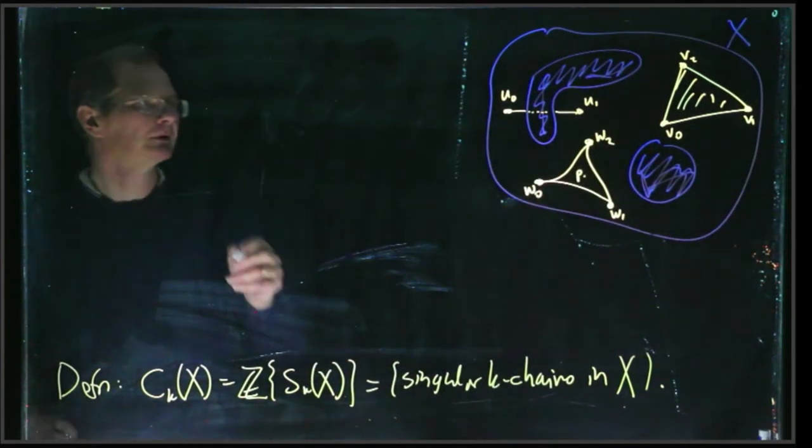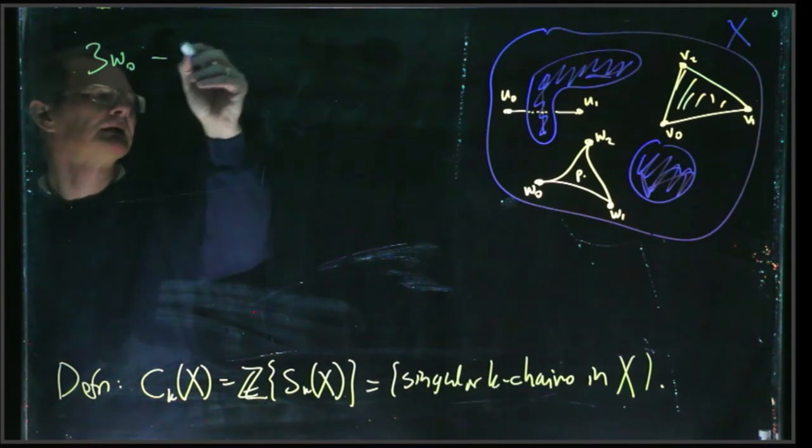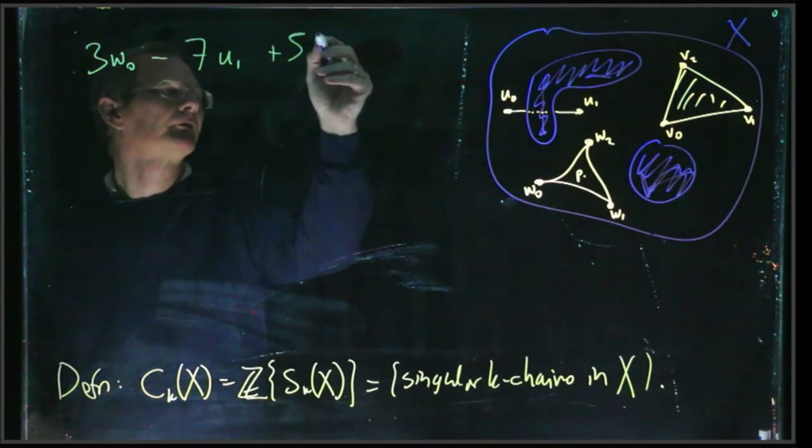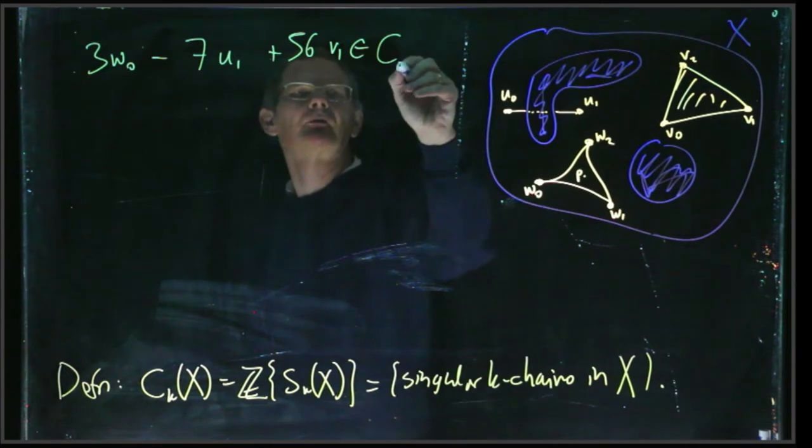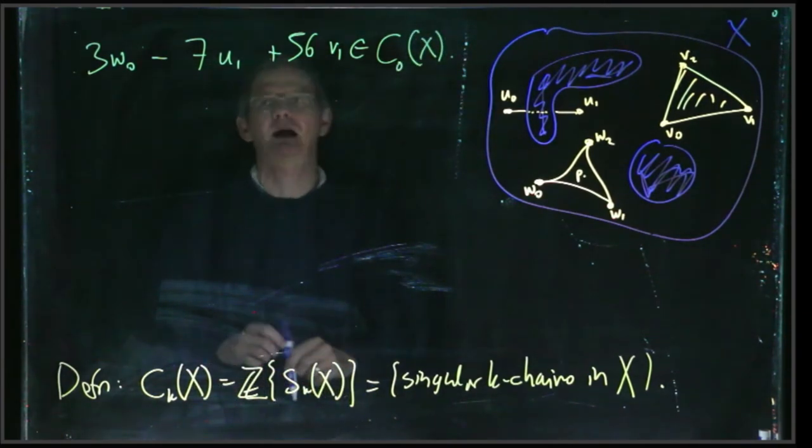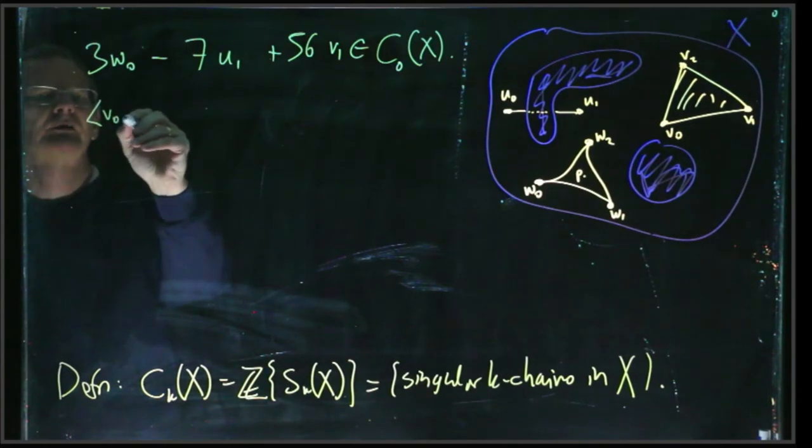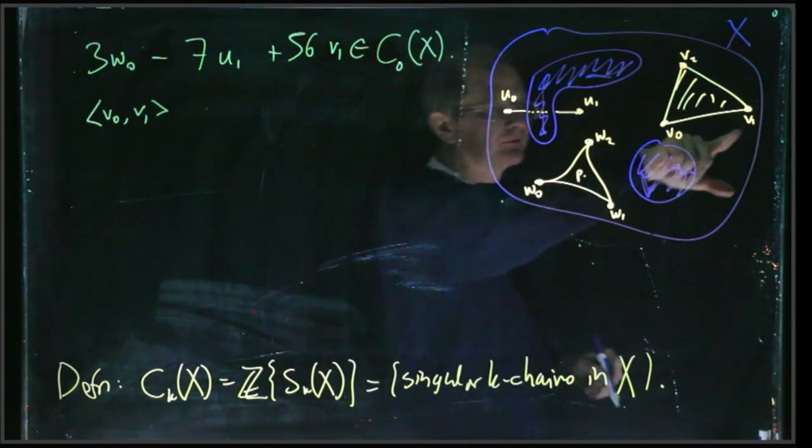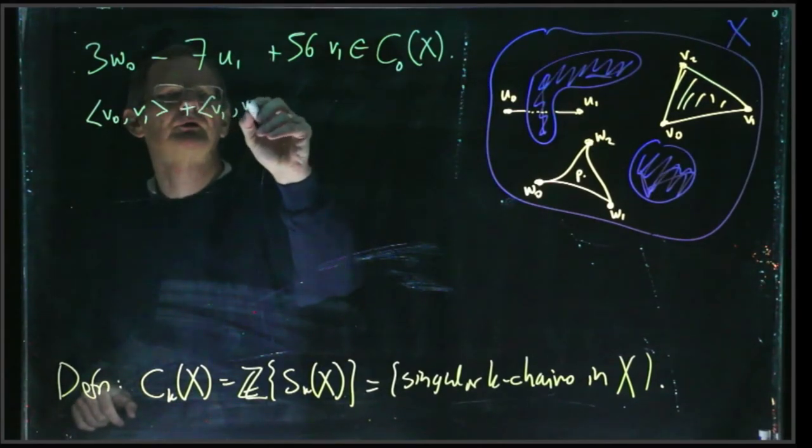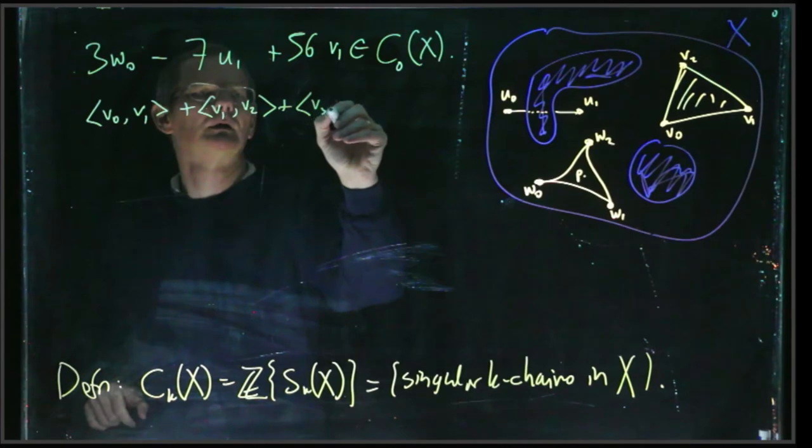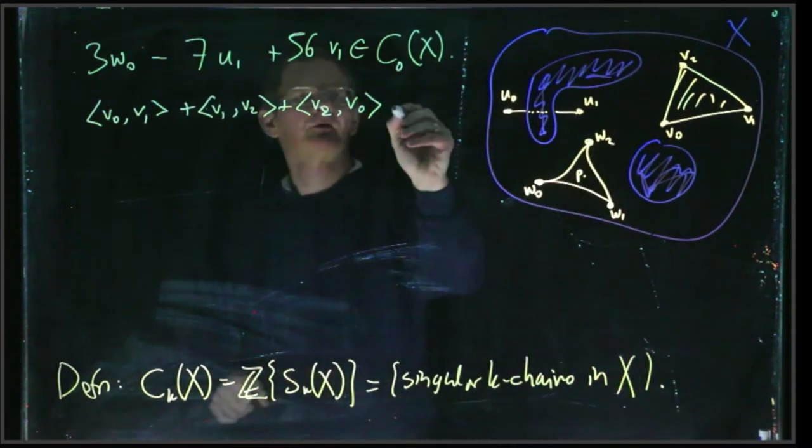Okay, so going back to these pictures here, for example, we could have, for a singular 0-chain, we could take 3v₀ - 7u₁ + 56v₁. So that's a linear combination of points in the space X. So this counts as an element of the chain group C₀(X). If we want some 1-simplices, we could do maybe something like ⟨v₀,v₁⟩. That's a linear 1-simplex going from v₀ to v₁. And then let's go around this triangle. We add in ⟨v₁,v₂⟩ plus ⟨v₂,v₀⟩. Okay, so that's the sum of all the edges around this triangle here. So this counts as an element of C₁(X).